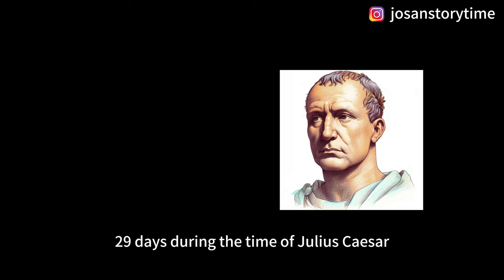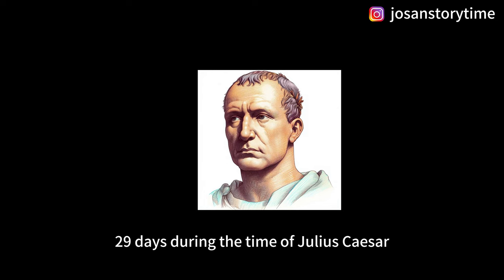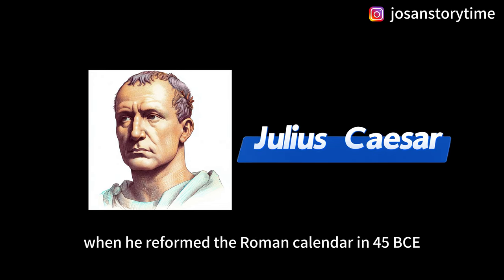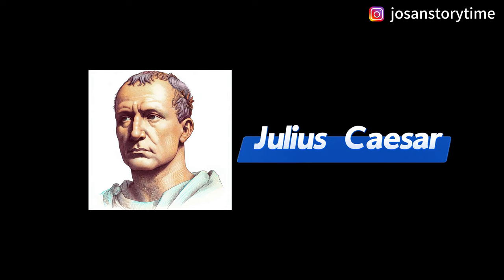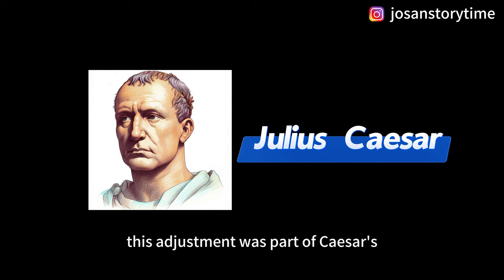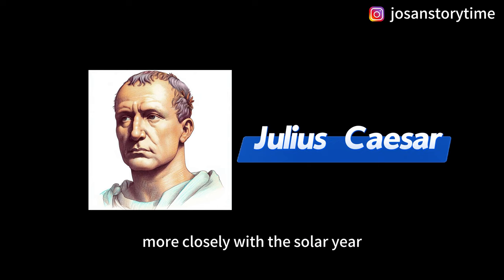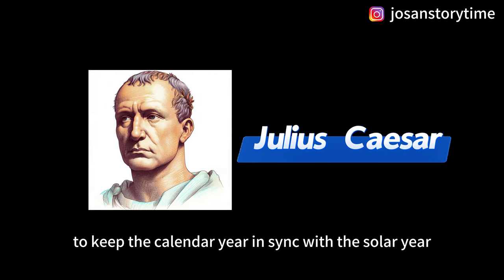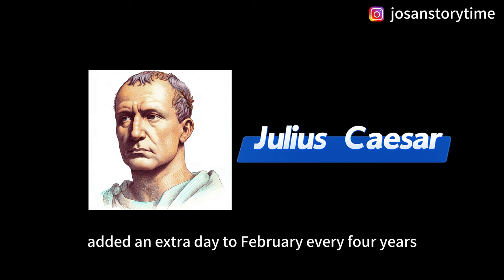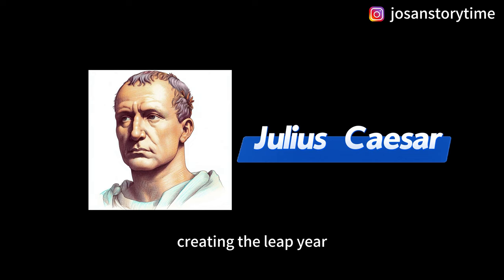Originally, February had 30 days, but it was later reduced to 29 days during the time of Julius Caesar when he reformed the Roman calendar in 45 BCE. This adjustment was part of Caesar's effort to align the calendar more closely with the solar year. To keep the calendar year in sync with the solar year, Julius Caesar added an extra day to February every four years, creating the leap year.